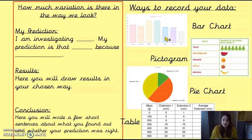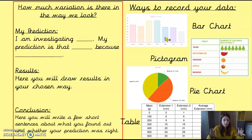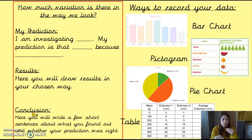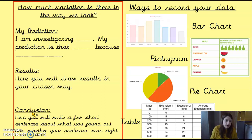If you're struggling with how to draw these, pop us an email or you can always Google how to draw a bar chart or line graph. Then have a results heading with your table or graph drawn underneath showing what you gathered. After that, write a short conclusion — a few sentences explaining what you found out, as if I can't read your results table. For example: 'In my results, I found that everybody had brown eyes, so my prediction was wrong, because I thought everybody would have blue eyes.' Note what you found out and whether your prediction was right.